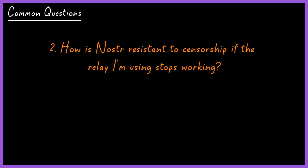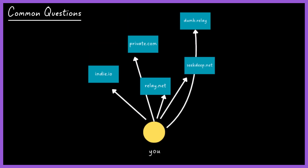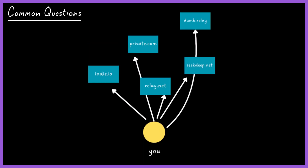How is Nostr resistant to censorship if the relay I'm using stops working? If a relay goes offline, the notes published on it might disappear, but that doesn't mean you've lost everything. Nostr allows you to post your notes to multiple relays simultaneously, so even if one relay fails, your information will be stored on other relays. Additionally, you can set up your own relay as a personal backup.